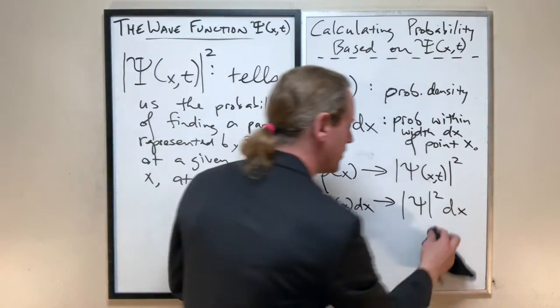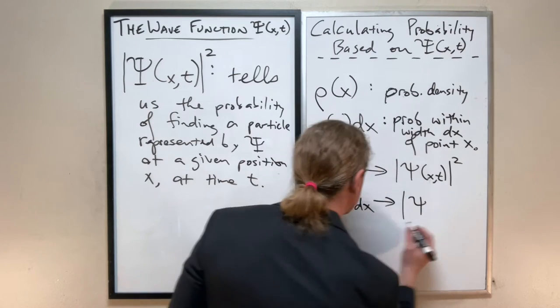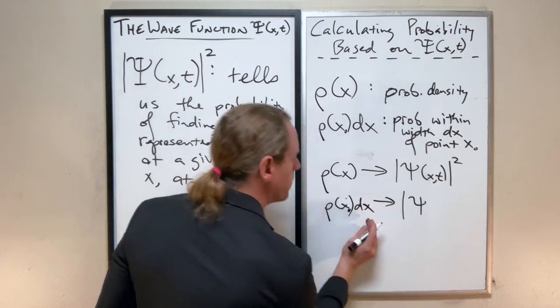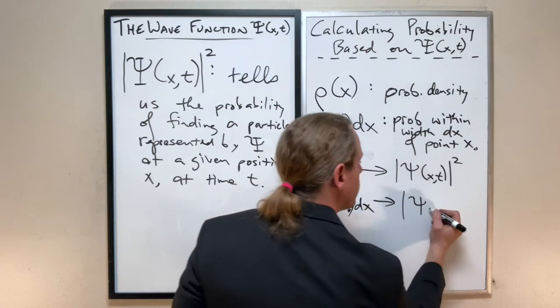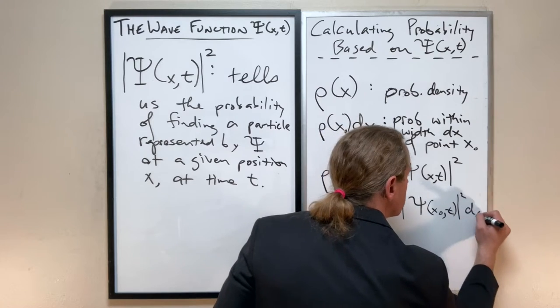and I'm going to omit the parentheses x and t here just to save room, that will turn into psi squared dx. You know what, and I'm actually going to change my mind on that because I want to expand on it just a tad. So if we consider the probability within a range of dx of x naught, like we've just done there, we'll write it like this, x naught comma t squared dx.